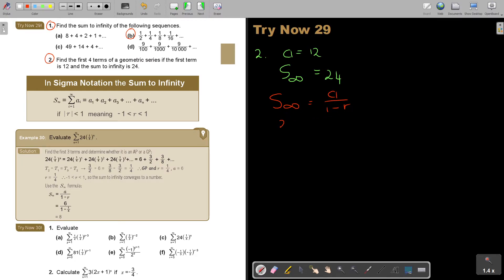So, infinity is 24. A is 12. And 1 minus R. Now, I cross-multiply. So, I get 24. 1 minus R is equal to 12. Then I divide 24. I divide 24.